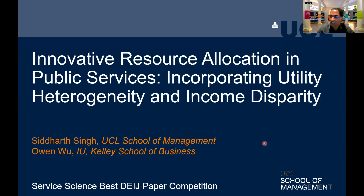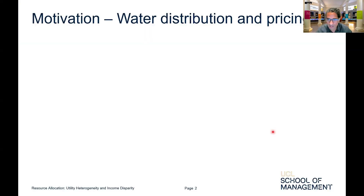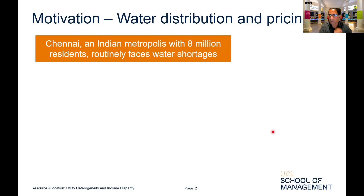This work is about resource allocation in public services, incorporating utility heterogeneity and income disparity. To ground this in practice, let's consider a public service corporation like a water and sewerage board that is trying to allocate water to its residents in a water-stressed region.